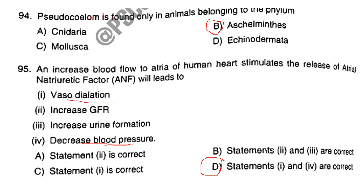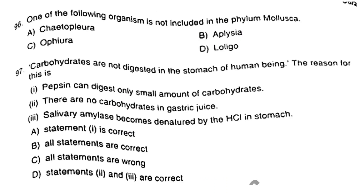Question number 96. One of the following organisms is not included in the phylum Mollusca. That is Option C: Ophiura. Question number 97. Carbohydrates are not digested in the stomach of human beings. The reason for this is Option D: statements two and three are correct — there are no carbohydrate-digesting enzymes in gastric juice, and salivary amylase becomes denatured by HCl in the stomach.